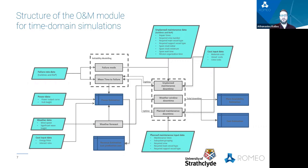The weather modeling module enables the forecasting of the future sea states, namely future significant wave heights and wind speeds. Weather conditions play an important role in the total downtime of the wind farm, as when the related parameters surpass the set wave height and wind speed limits of the vessels, traveling to wind turbines and accessing them becomes impossible.